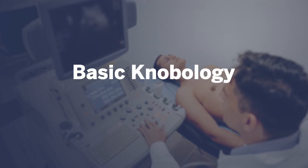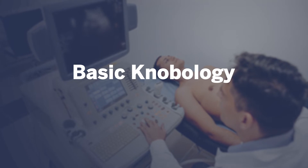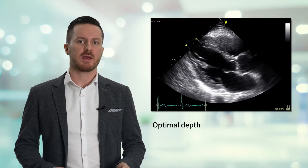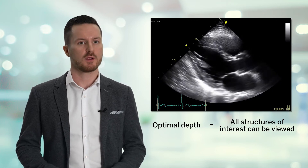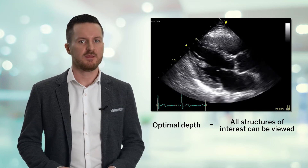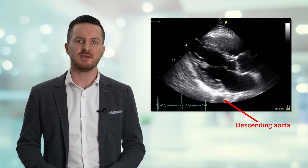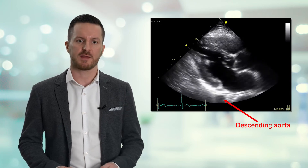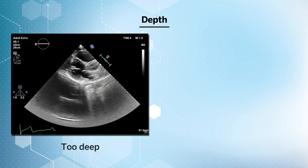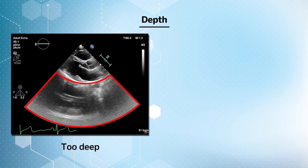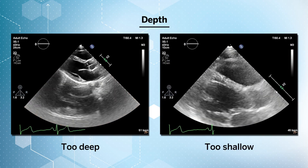In terms of basic knobology, there are two basic functions we need to be aware of on the ultrasound system in order to optimize our image. The optimal depth setting is when all structures of interest can be viewed on the screen — no more, no less. In this example, we have a parasternal long axis view and we can see that the descending aorta is the deepest structure of interest and is correctly located at the bottom of the screen. The image on the left shows that the imaging depth is too deep with a lot of wasted real estate in the far field, whereas the image on the right is too shallow and we are cutting off structures of interest.